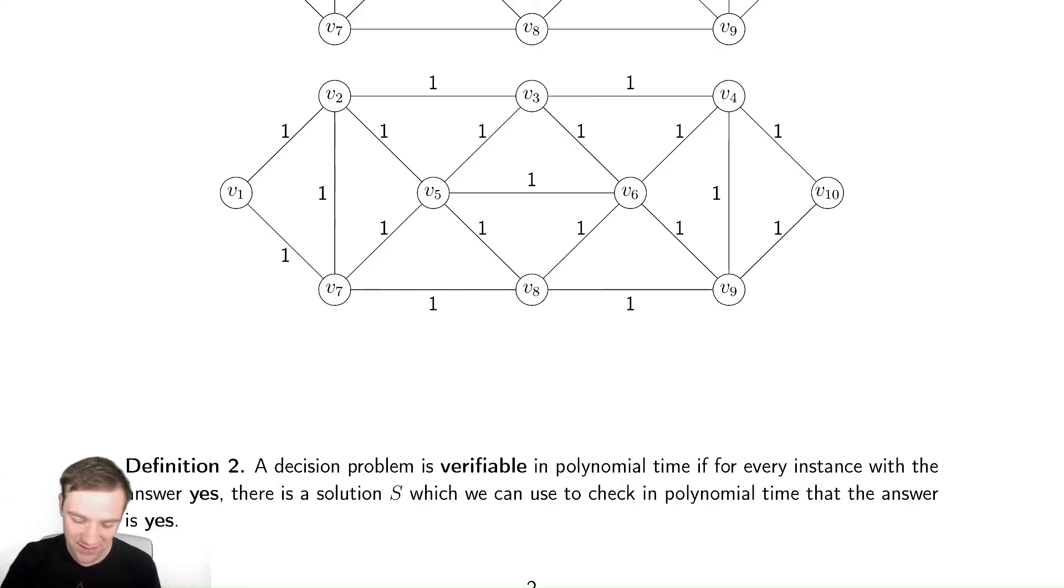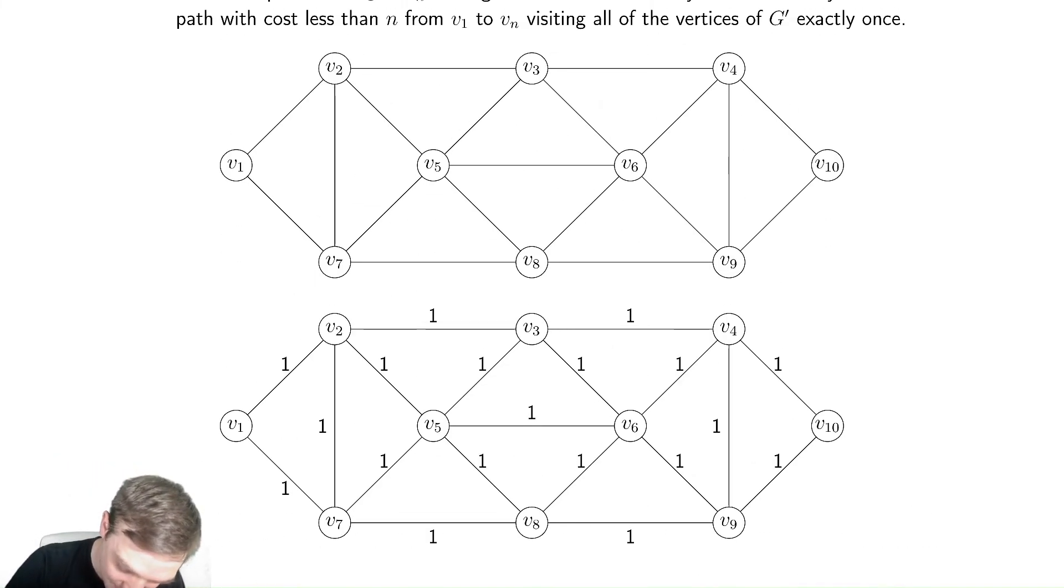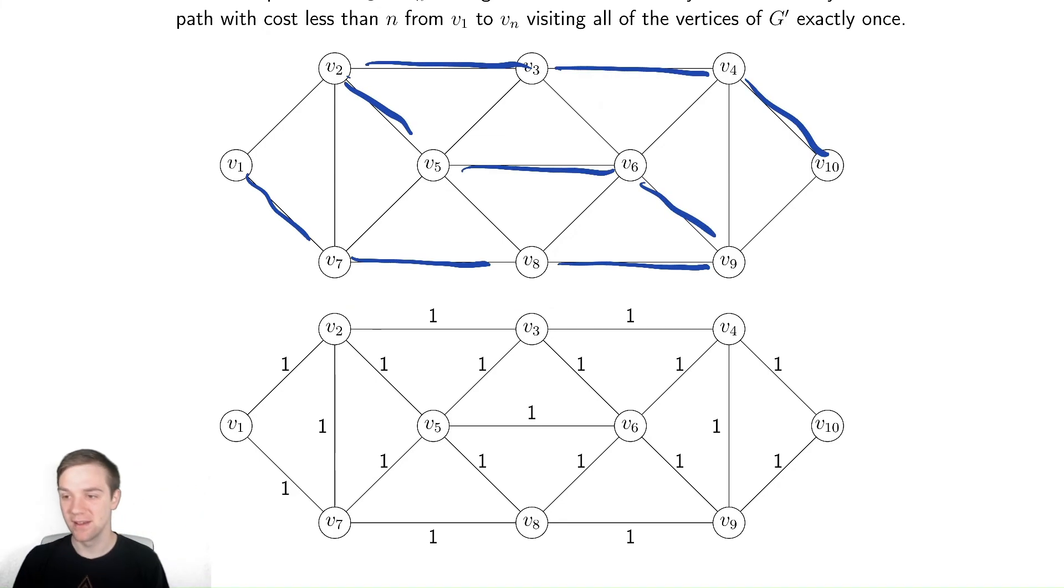If I tell you, for example, that the following path is a Hamiltonian path, this path here, the one we found earlier, it's really easy to check. You just check does it visit each vertex once and does it start at the start and end at the end. Really easy. So it's very easy to check the problem. You can verify that the answer is yes. That is a different thing from finding the answer. We'll talk about that in more detail in future videos.